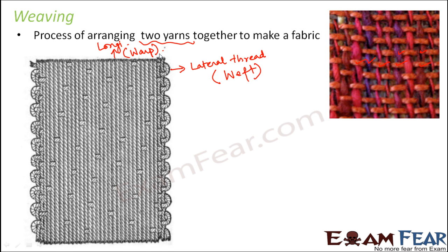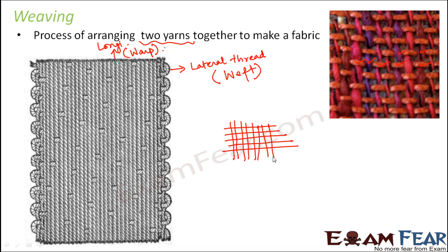So warp and weft — what happens is you basically have one set of threads which are placed horizontally, and then you have another set of threads which are woven through these horizontally placed strands. You have horizontal strands and through those, the vertical strands go through them. That's how you get a woven structure. This process is called weaving — two distinct sets of yarn are interlaced to form a fabric or a cloth.